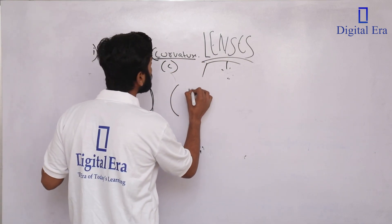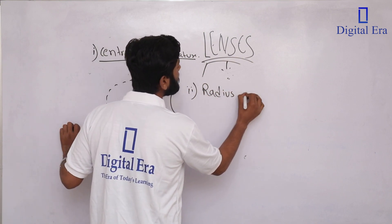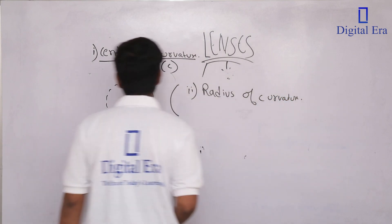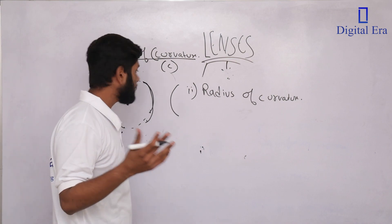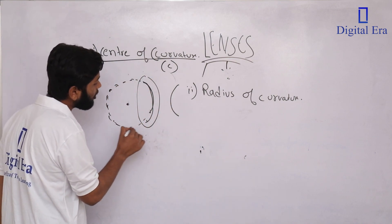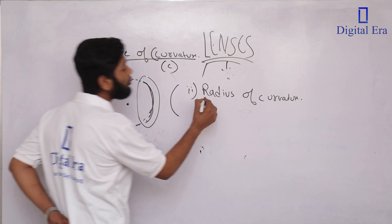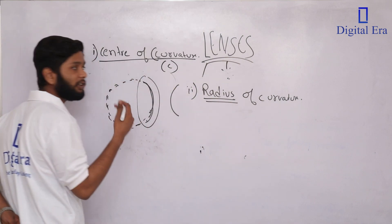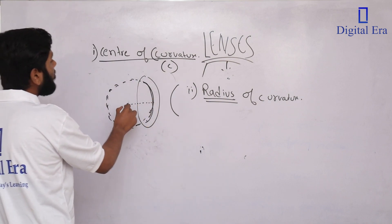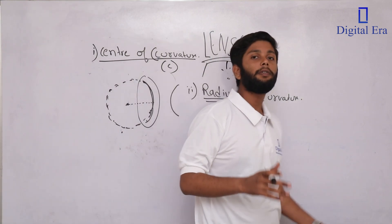Our second point is Radius of Curvature. We know what radius is — we had just a small curved portion of the lens, and when we extended the imaginary line, a full circle was formed. Half of the diameter is called radius. So the distance from the center of curvature to the curve is the Radius of Curvature.